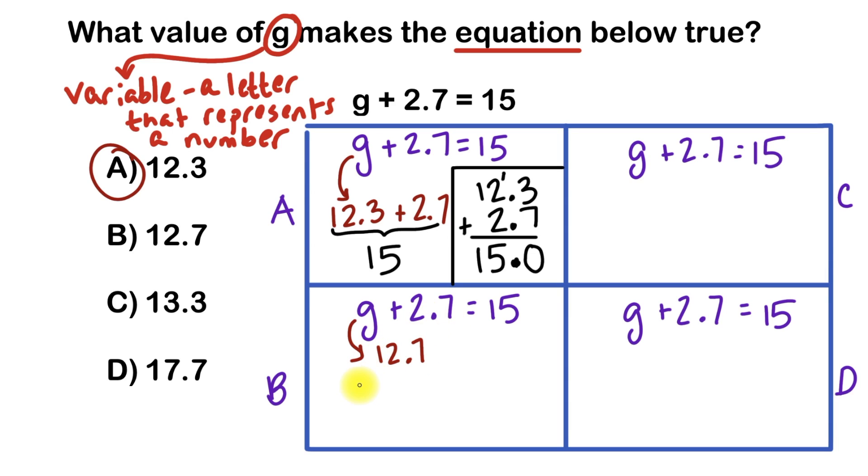And I would add 2.7 to that. And notice how I made sure I lined up my decimal points here. And that allowed me to line up my place values properly. So we've got 7 plus 7 is 14. That's a two-digit number.